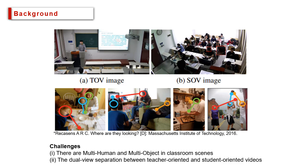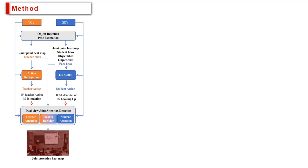In this paper, we propose a framework that combines human-object interaction detection and dual-view gaze estimation to deal with the above difficulties. First, we construct two datasets of multi-human and multi-object in the classroom sense.